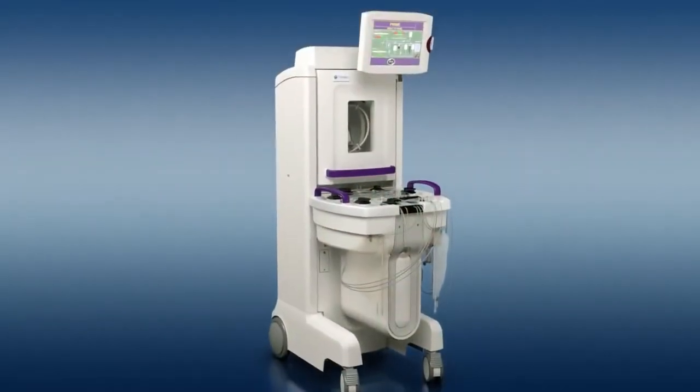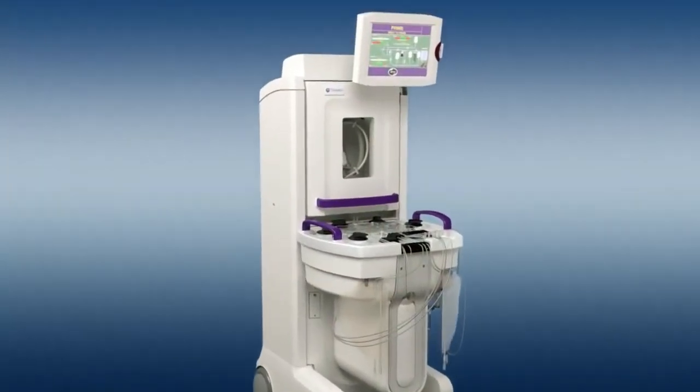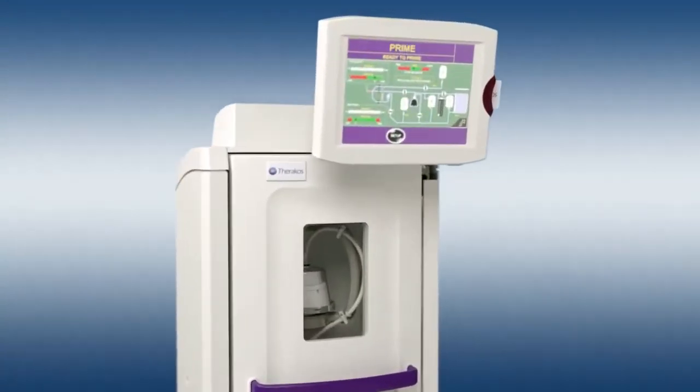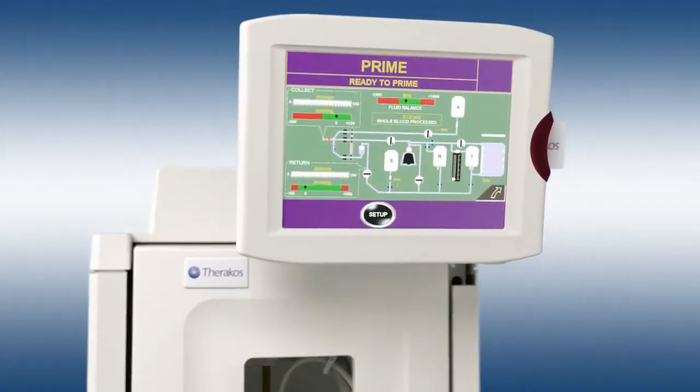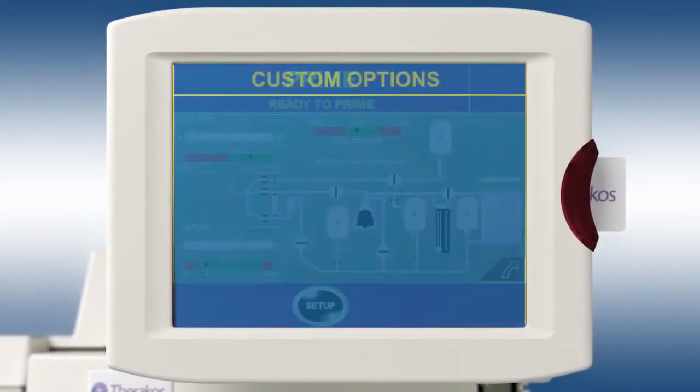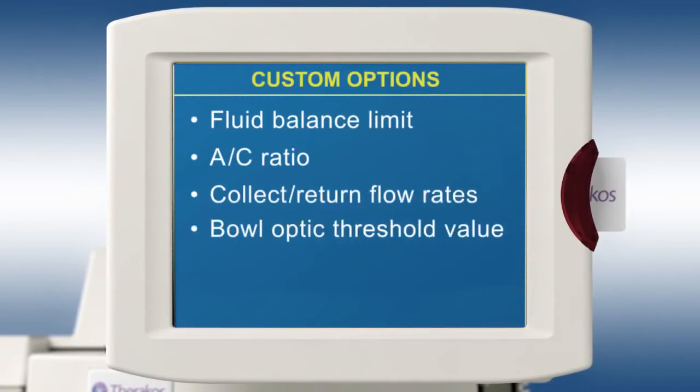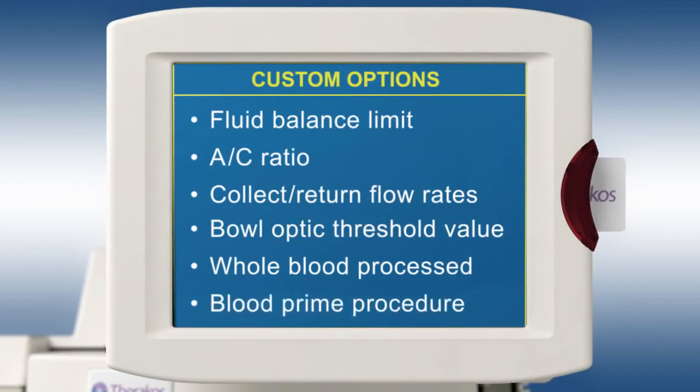The Theracose Celex photophoresis system allows physicians to customize their treatment options using the sophisticated user-friendly operator interface. Some options available to the healthcare professional within the interface are fluid balance limit, AC ratio, collect return flow rates, bowl optic threshold value, whole blood processed, and the ability to complete a blood prime procedure.